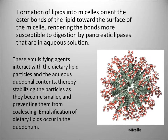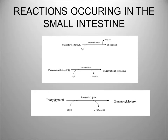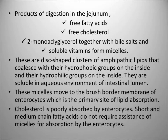Formation of lipids into micelles orients the ester bonds of the lipids toward the surface of the micelle, rendering the bonds more susceptible to digestion by pancreatic lipases in aqueous solution. The pancreatic secretion of hydrolytic enzymes that degrade dietary lipids is hormonally controlled. The presence of partially digested protein in the upper regions of the small intestine is detected by the cells of the mucosa, and CCK is produced. In the small intestine: cholesterol ester forms cholesterol by cholesterol esterase; phosphatidylcholine forms glycerophosphorylcholine by pancreatic lipase; triacylglycerol forms 2-monoacylglycerol by pancreatic lipase. Products of digestion in the jejunum — free fatty acids, free cholesterol, 2-monoacylglycerol, together with bile salts and fat-soluble vitamins — form micelles.